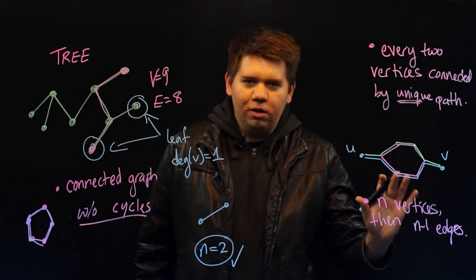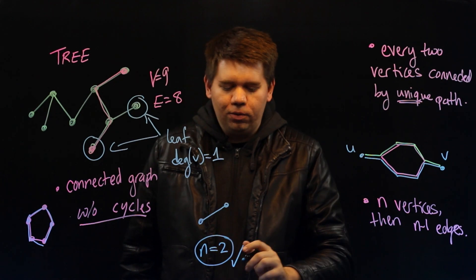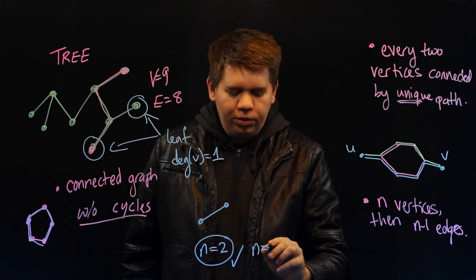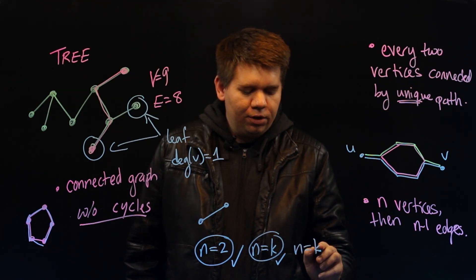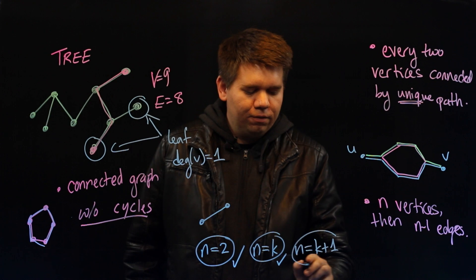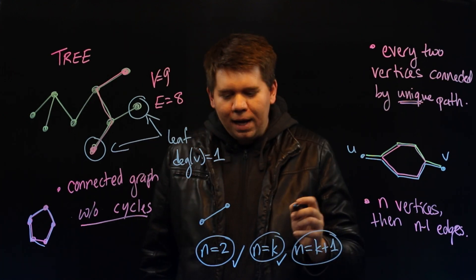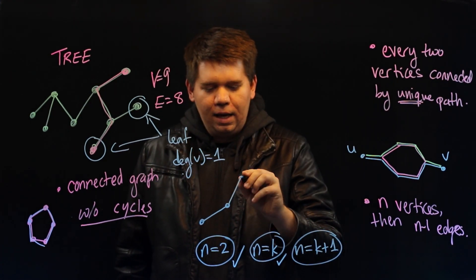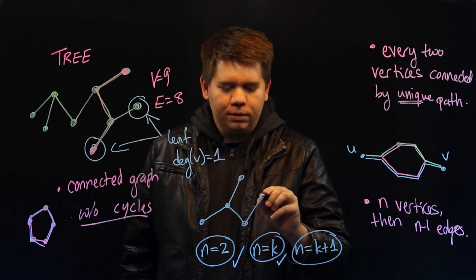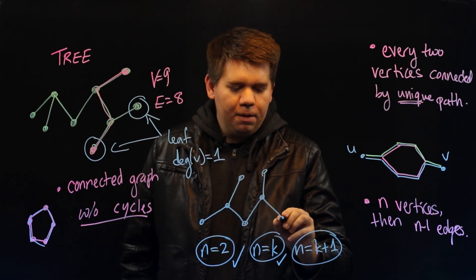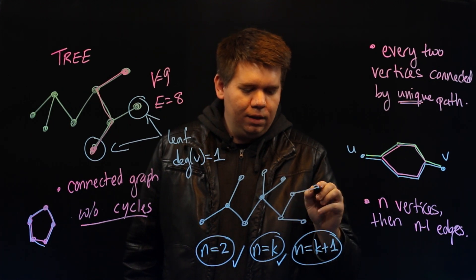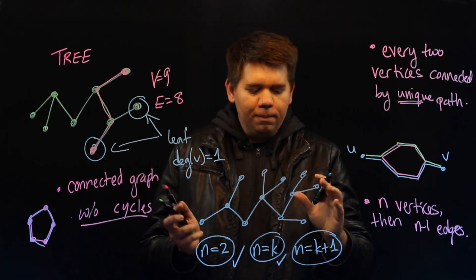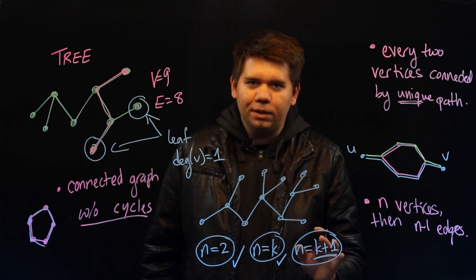Okay. So the fact holds when n equals 2. So we're going to assume it's true when there are k vertices. And now we need to show it's true when there are k plus 1 vertices. So imagine some graph that has k plus 1 vertices. A tree with k plus 1 vertices. We don't know what it looks like. It could look like anything. But you have some tree with k plus 1 vertices.